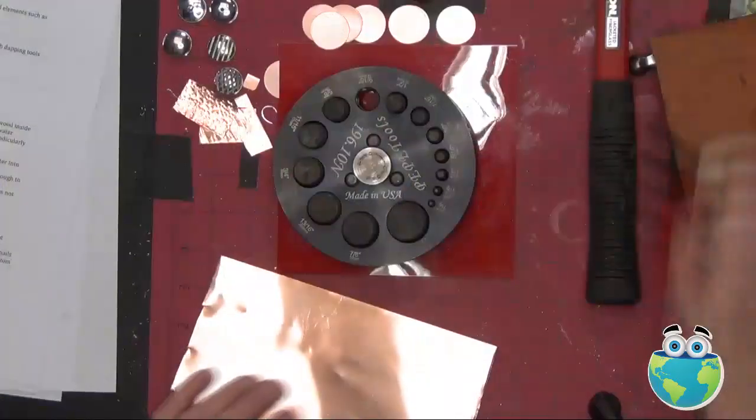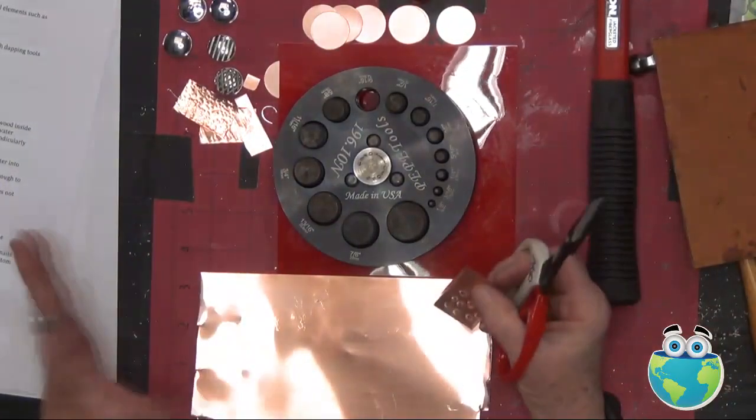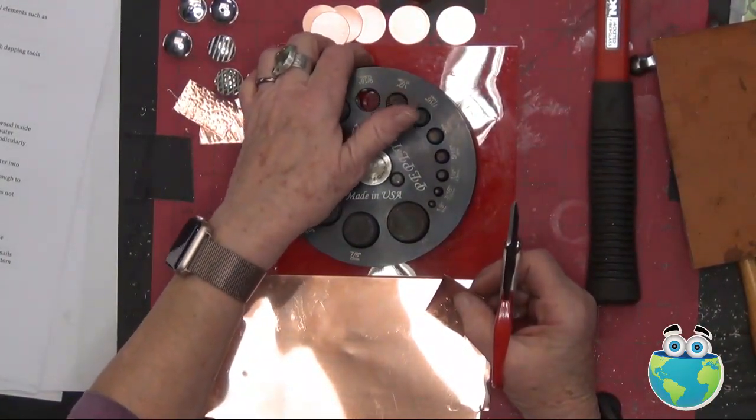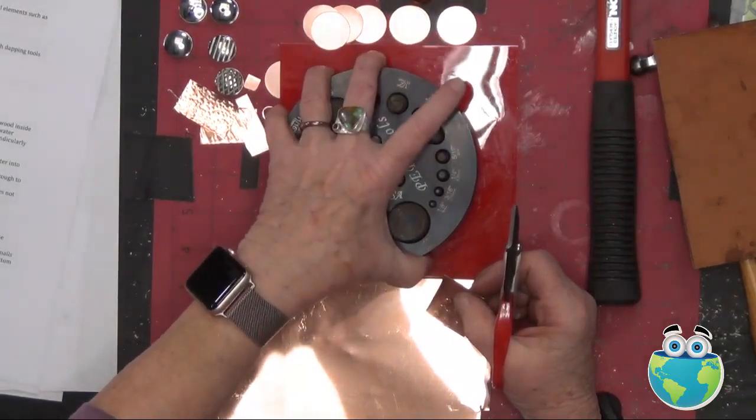So the thing with this is that you also, whatever circle you're going to cut out of this, you want to go to the other side of this and put a piece of metal in so that this remains level while you're cutting.